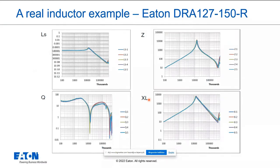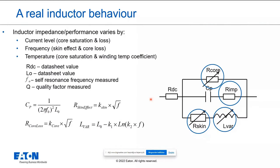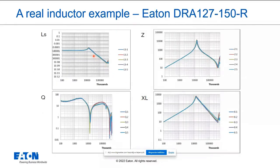As an example, our DR-127 is a very popular automotive inductor type. It shows that there is no ideal inductor — inductance level, impedance, reactance, and quality factor all depend on the frequency applied. Because of interwinding capacitance, there is a self-resonance frequency (SRF) introduced. Before the SRF, the component works as an inductor; above the SRF, it behaves more like a capacitor.